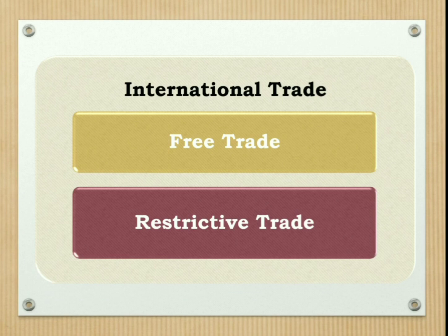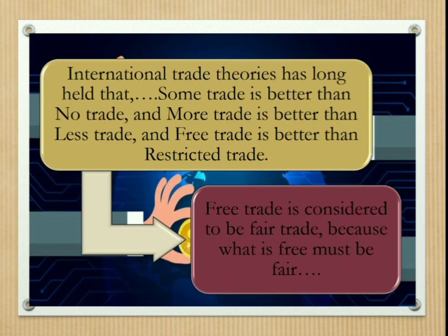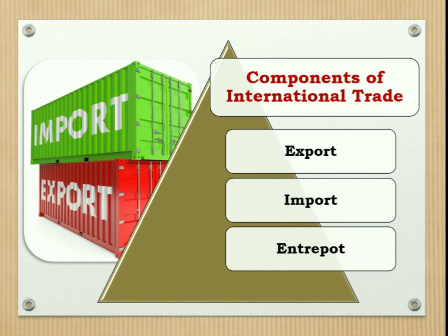International trade may be free or restricted. Free trade is a situation where a government does not influence international trade through quotas and tariffs. If trade between countries is obstructed by the government, it is known as restrictive trade — a government policy of providing protection to domestic industries from foreign competition. International trade theory holds that some trade is better than no trade, more trade is better than less trade, and free trade is better than restricted trade.